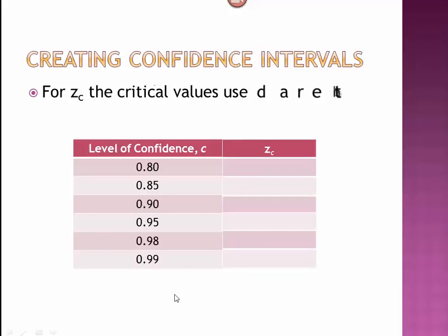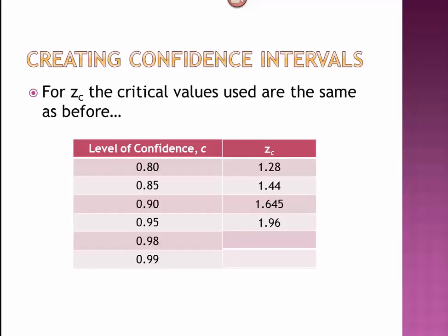Since we're using Z, you can use all of those values that are on your T table. Here are some of the common ones: 80% is 1.28, 85% is 1.44, 90% is 1.645, 95% is 1.96, 98% is 2.326, and 99% is 2.576.